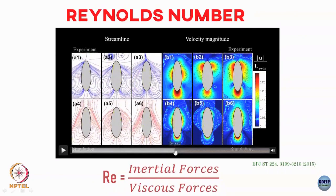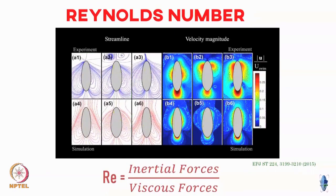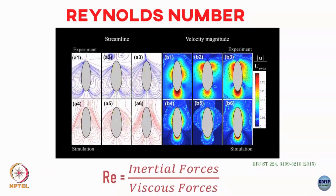If you look at this velocity contour map — the top panel shows the experiments, the bottom panel shows the simulations based on the Navier-Stokes equation — you can reproduce a lot of the observations you see in the experiments. A key quantity that tells us what sort of terms will be important in the Navier-Stokes equation is called the Reynolds number, which is a measure of how strong the inertial forces are compared to how strong the viscous forces are. I will go into more detail about what I mean by this after we have done the Navier-Stokes equation.